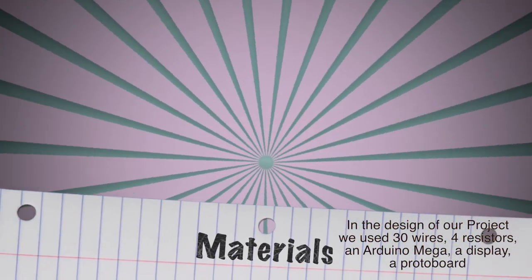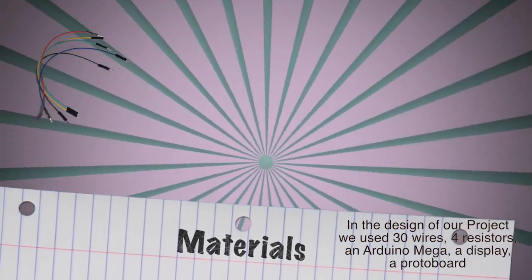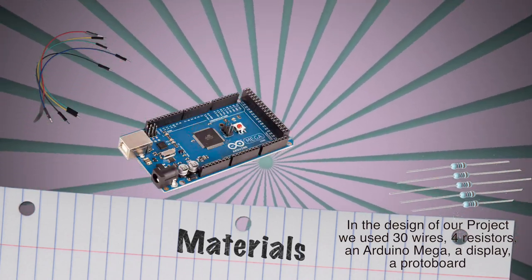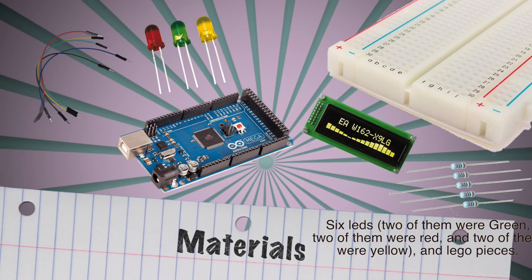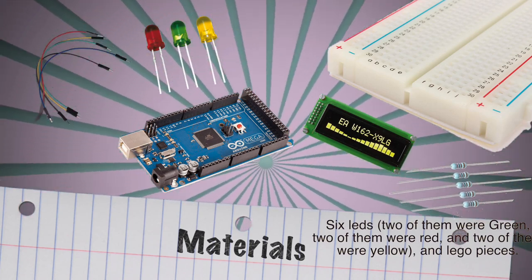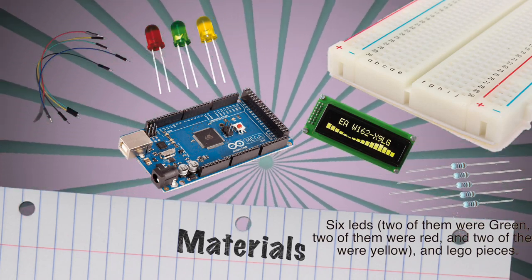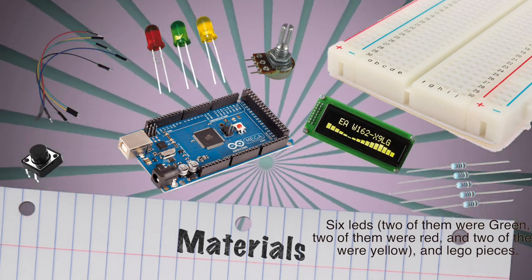In the design of our project, we used 30 wires, 4 resistors, an Arduino Mega, a display, a protoboard, 6 LEDs (two of them were green, two of them were red, and two of them were yellow), a potentiometer, a push button, and Lego pieces.